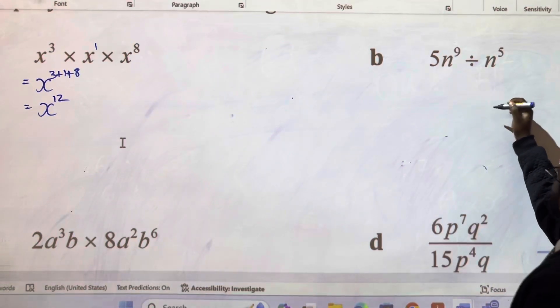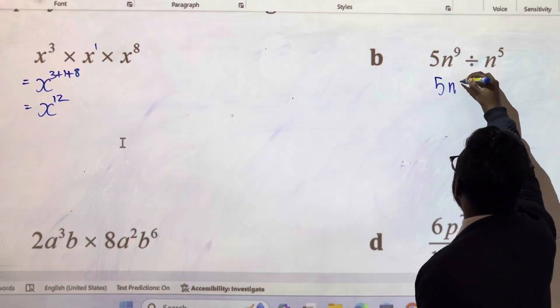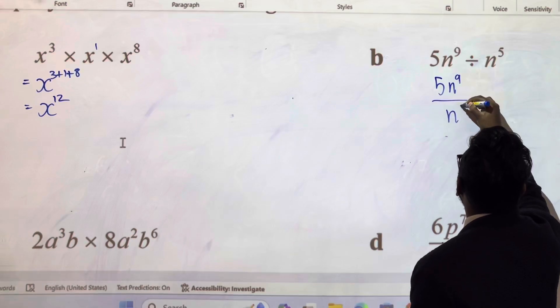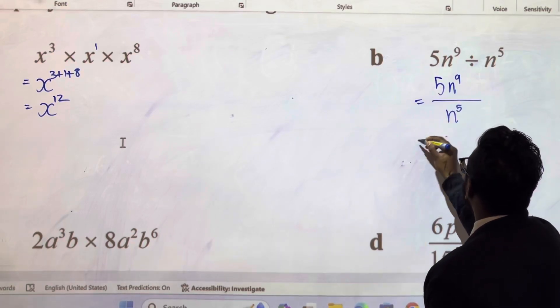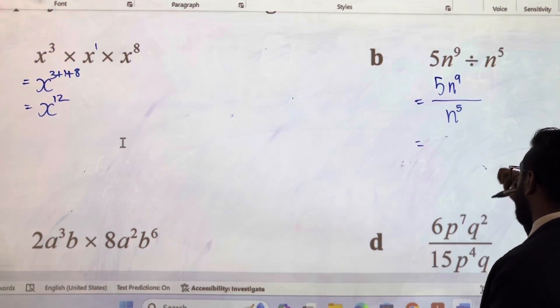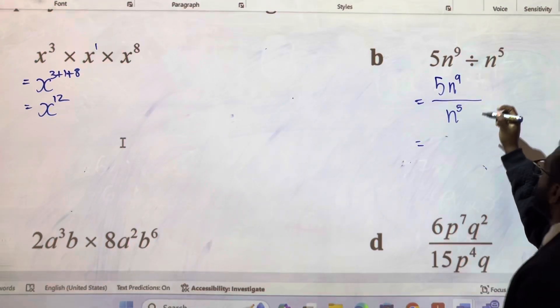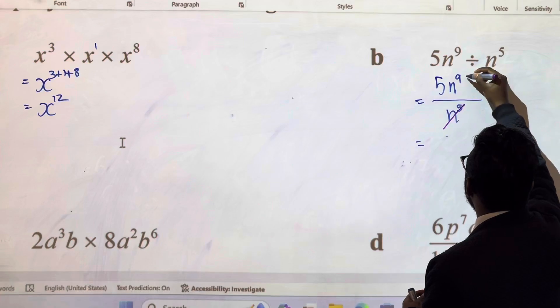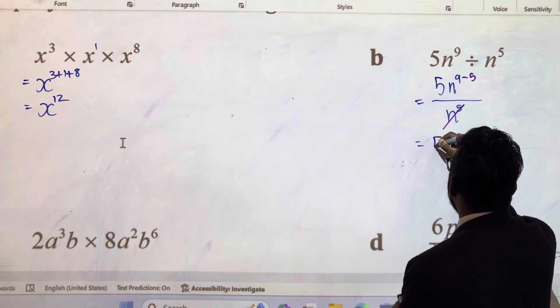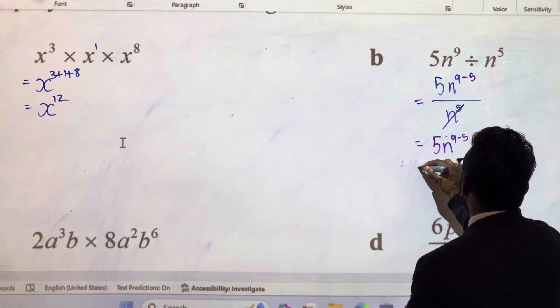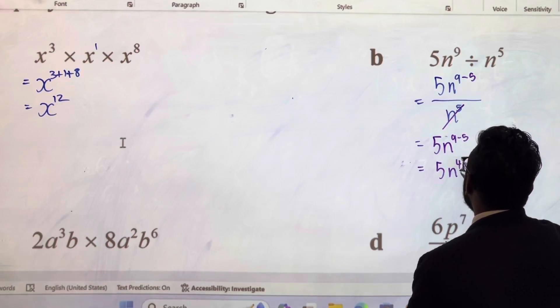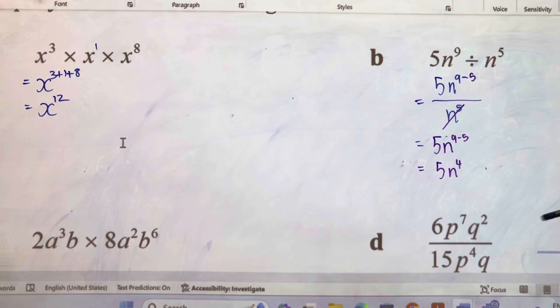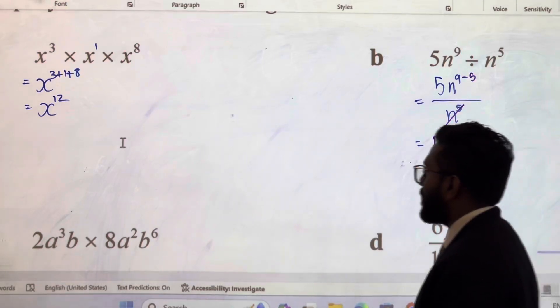Next question. I'm going to write this as a fraction. Next part is I'm going to have to subtract because this is second law of indices. So these have the same bases, so take away the 5. 5n take away the 5 is 5n to the power of 4. That's your answer for that question, that's worth one mark as well.